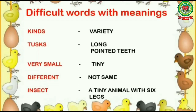The next phrase is very small — V-E-R-Y S-M-A-L-L. Very small means tiny — T-I-N-Y. The next word is different — D-I-F-F-E-R-E-N-T. Different means not same. Afterwards, the word is insect — I-N-S-E-C-T. Insect means a tiny animal with six legs.